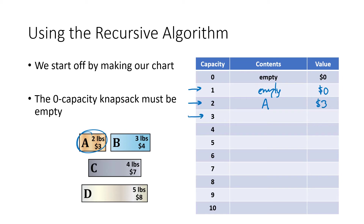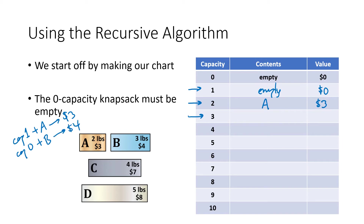For the capacity-three knapsack, we have two options. It could be the best capacity-one knapsack plus an A — since capacity-one was empty, this is just an A worth three dollars. Or it could be the best capacity-zero knapsack plus a B — that's also empty, so adding a B gives us four dollars. Four dollars is better than three, so the best capacity-three knapsack is worth four dollars.